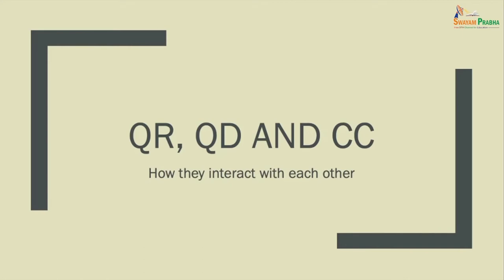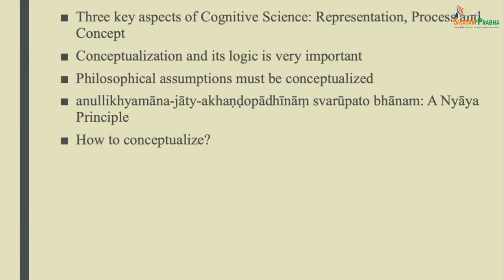We are exploring whether we get some guidance from Indian principles or methods. We see that there are similarities between the approach of classical Indian philosophers and that of cognitive scientists. All of them consider that representation, process, and concept are very important aspects of doing whatever they do in both fields.